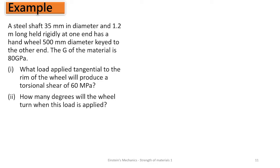In this episode, we are going to solve a problem under torsion, a simple one. Now let's look at the problem. A steel shaft 35 mm in diameter and 1.2 m long is held at one end and has a wheel with 500 mm diameter keyed to the other end. The shear modulus of the material G is 80 gigapascal. We need to find: what load applied tangential to the rim will produce a torsional shear of 60 megapascal, and by how many degrees will the wheel turn when the load is applied. So let's get to work.